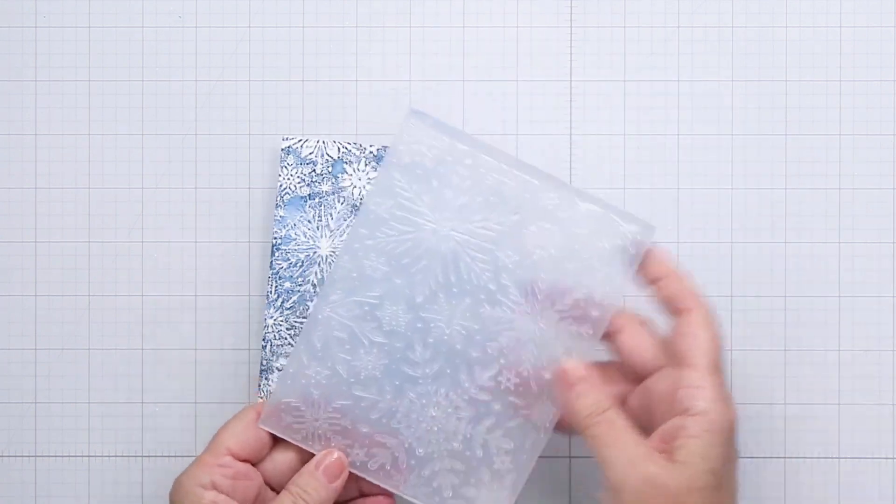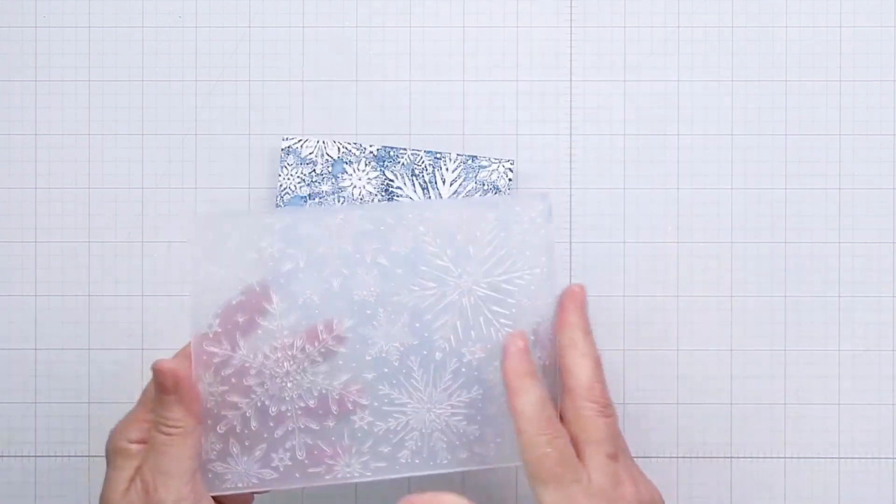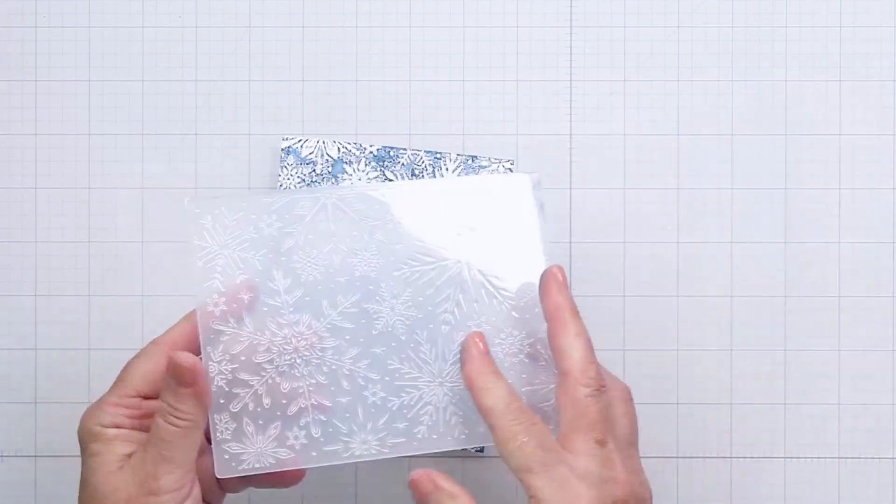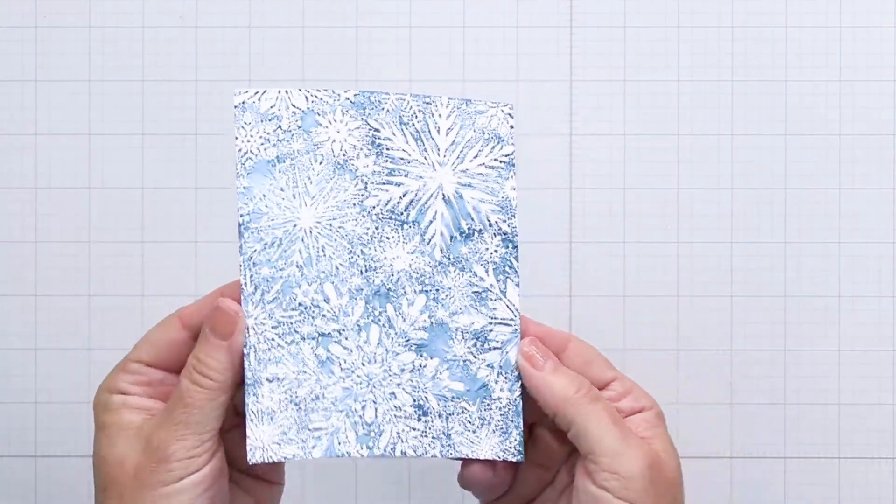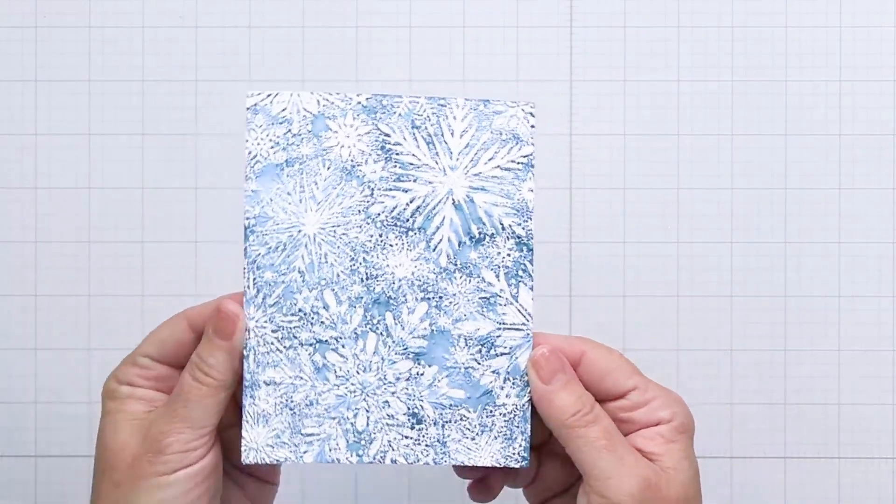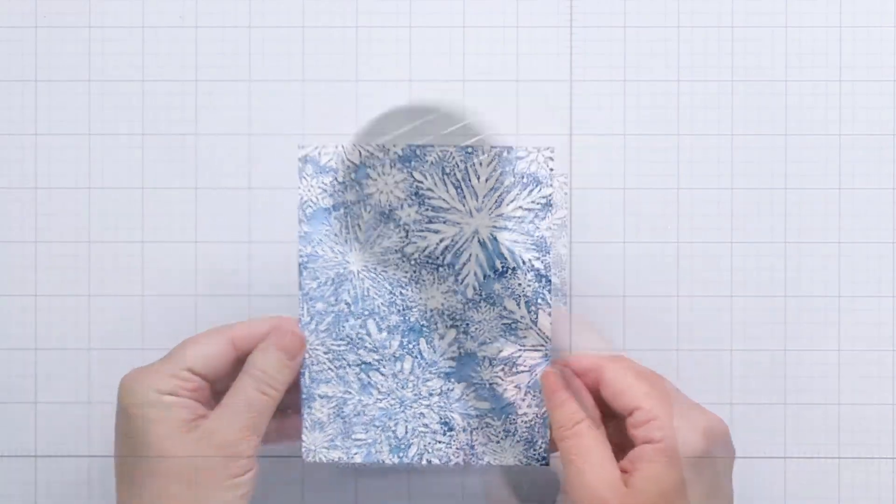You'll notice that the raised edge of the snowflakes are mostly white and then the background is blue, so you can see how nicely the folder cleaned up. I'll give you a really nice close-up of how beautiful this distressed background looks when it's finished.